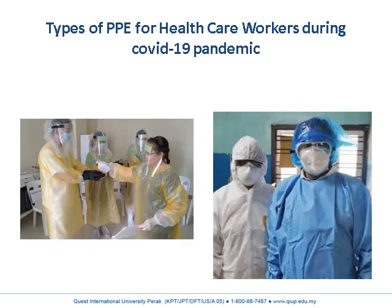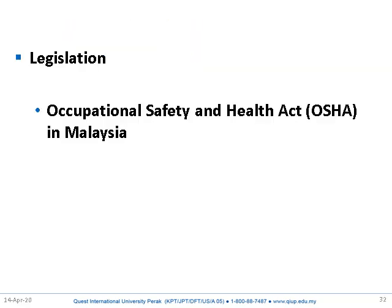Types of PPE for healthcare workers include universal work precautions. Health workers must use PPE to protect themselves. There is also legislation on occupational safety and health — in Malaysia, it is OSHA, the Occupational Safety and Health Act. That concludes today's lecture.